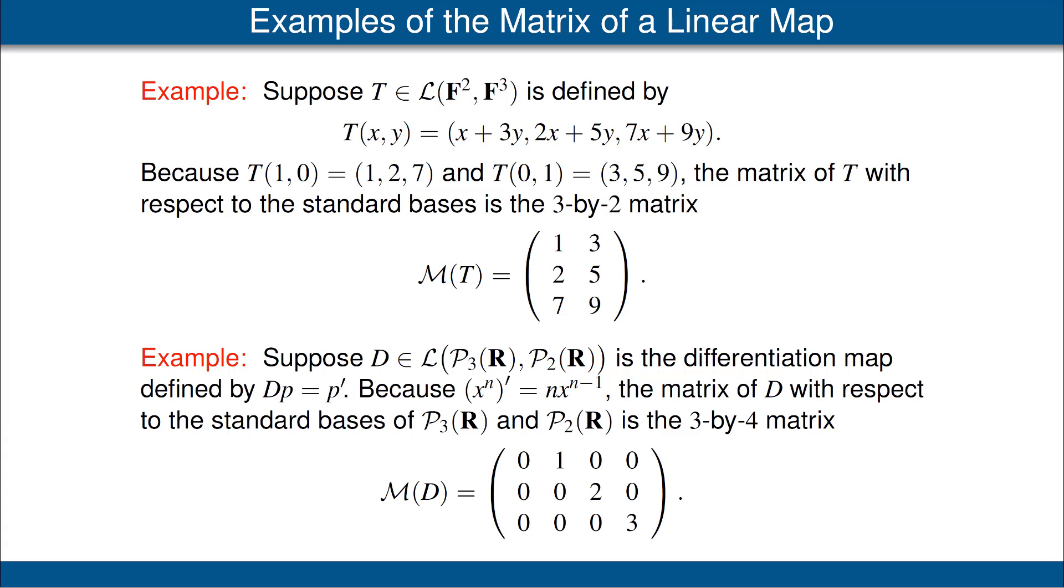Our first basis vector is the constant function 1 and its derivative is 0, so the first column consists just of 0s. Our second basis vector is x, its derivative is the constant function 1, so the second column of our matrix is (1,0,0). Our third basis vector is x², the derivative of x² is 2x, thus our third column is (0,2,0). The last vector in our basis for P₃(R) is x³, the derivative of x³ is 3x², thus the fourth column of the matrix is (0,0,3).